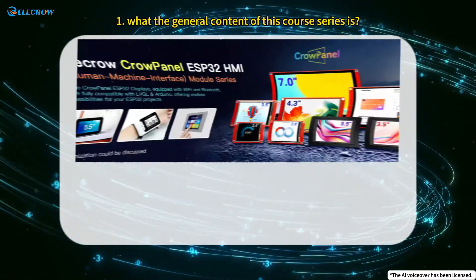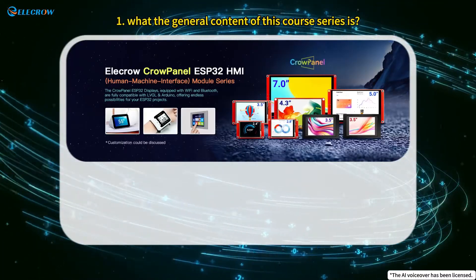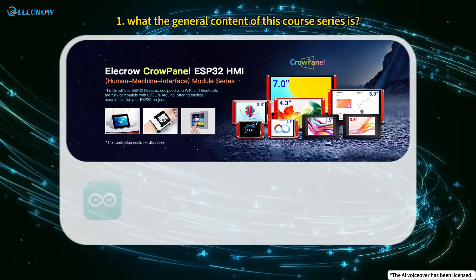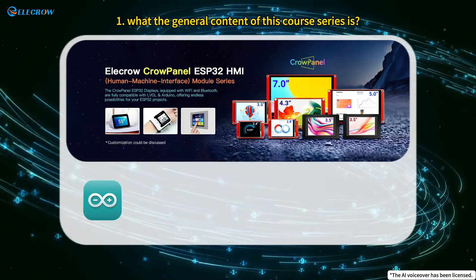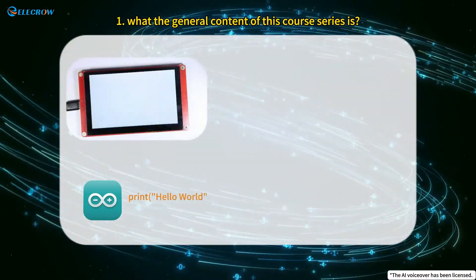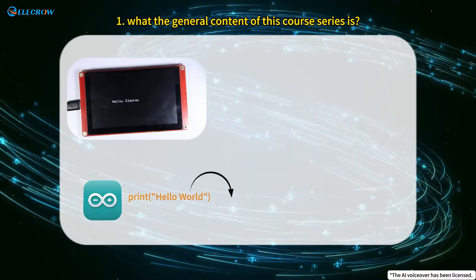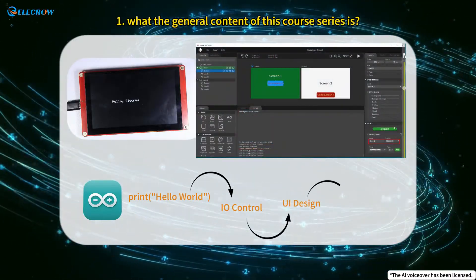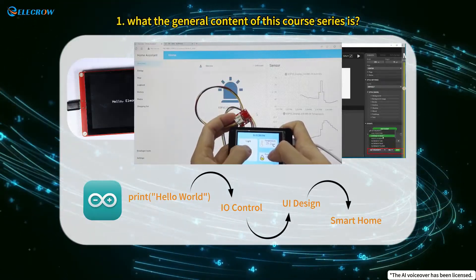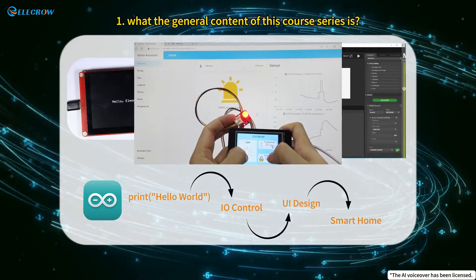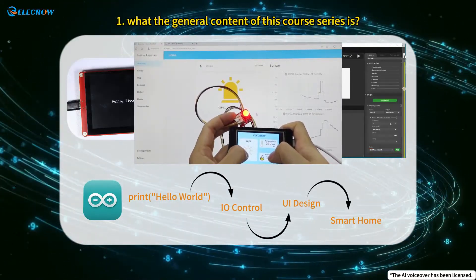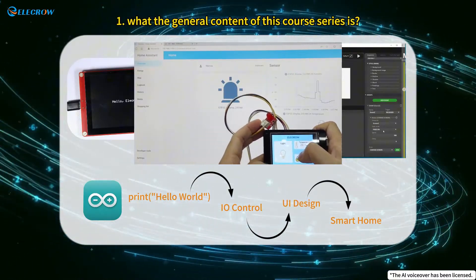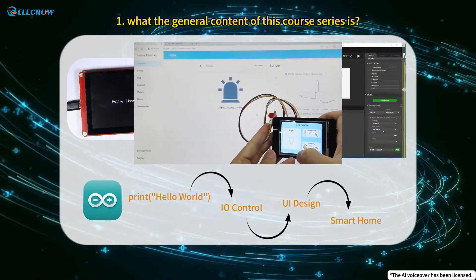This video series is dedicated to exploring the functional applications of the Crow Panel board. We'll be utilizing the Arduino IDE and starting with the basics like the simple Hello World program. Then we'll gradually move on to IO port control, UI design, and even applications in smart homes. Every step is explained in detail, making it perfect for beginners. Plus, we're constantly adding more courses so you can expect even more exciting content in the future.